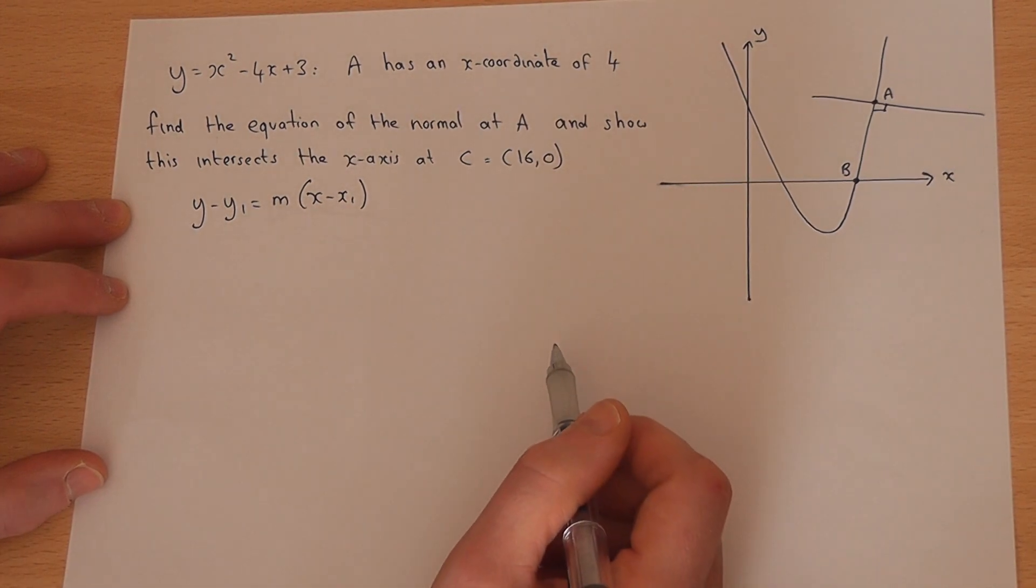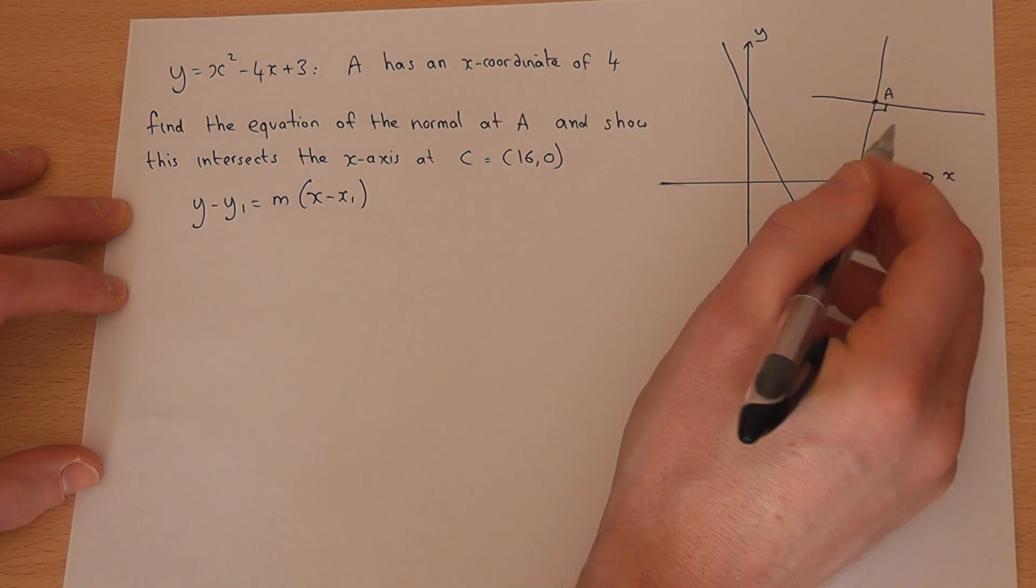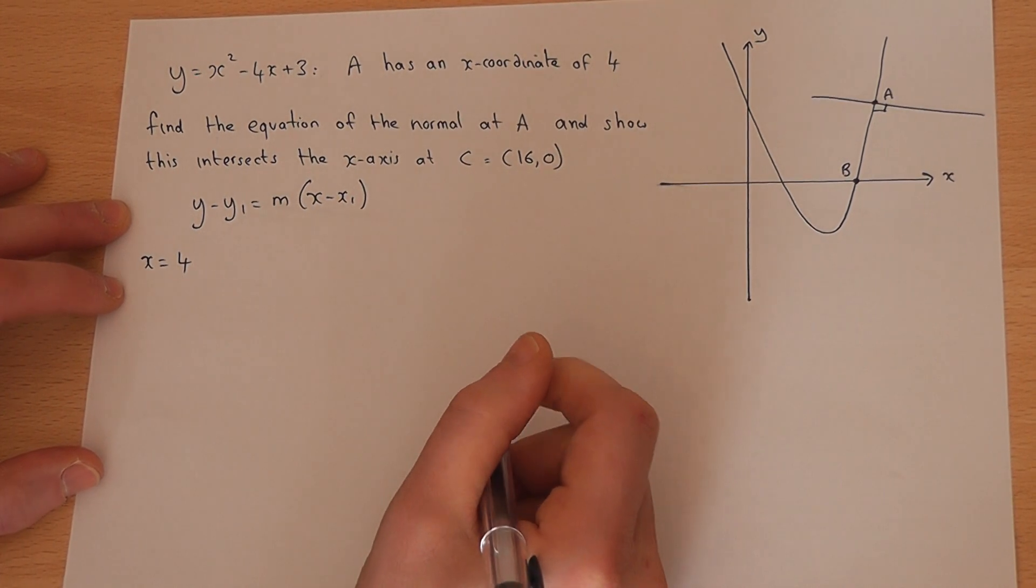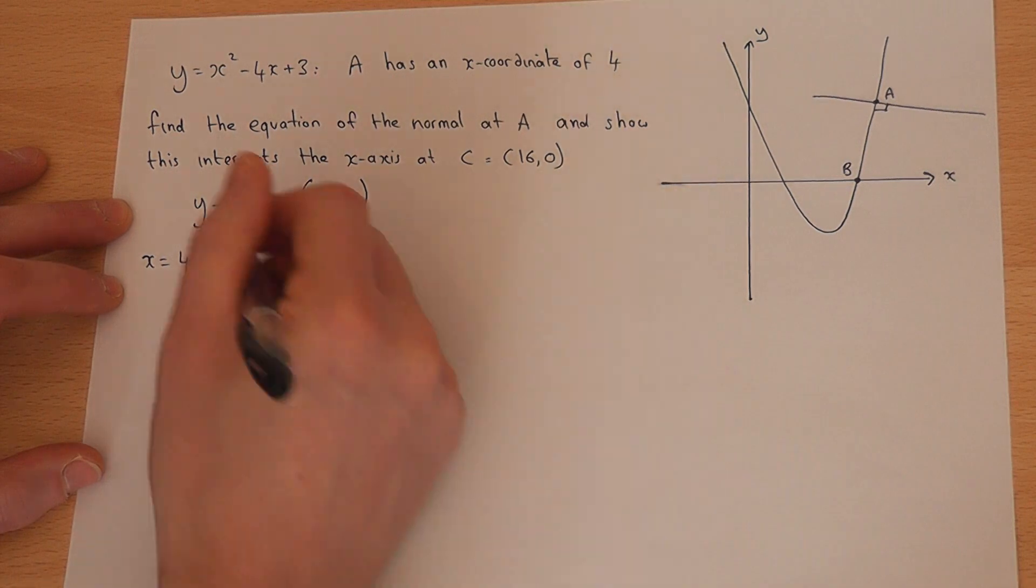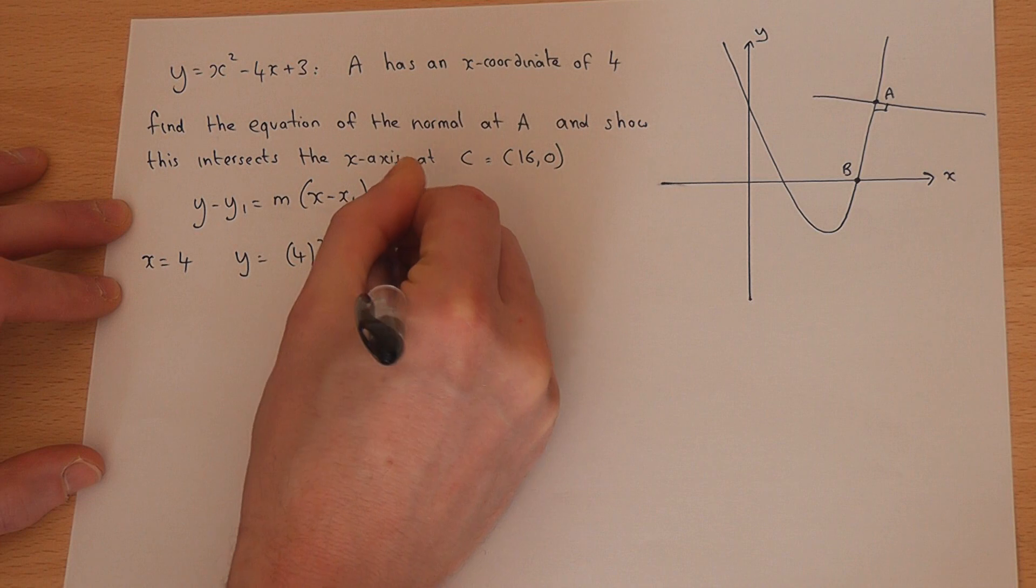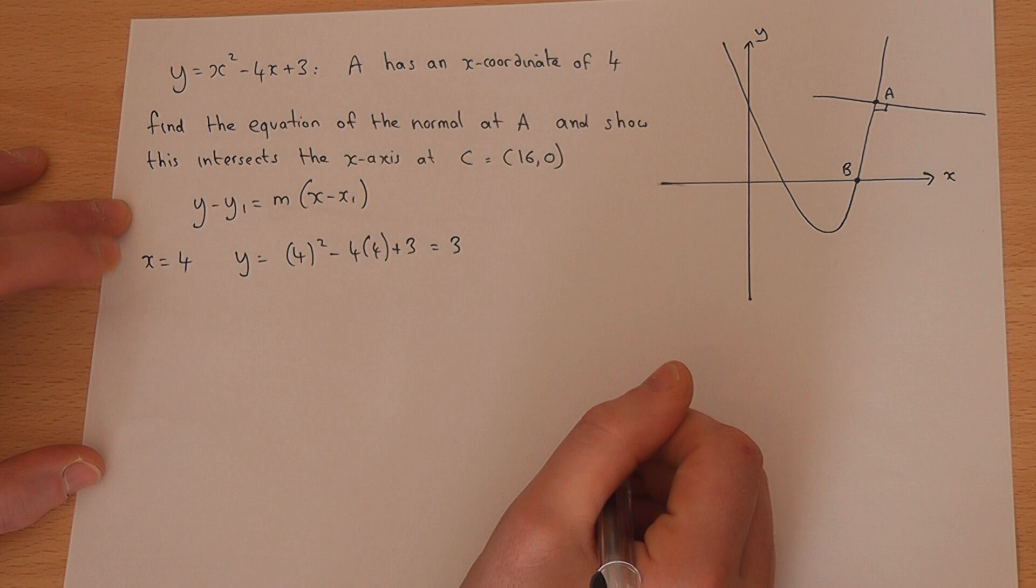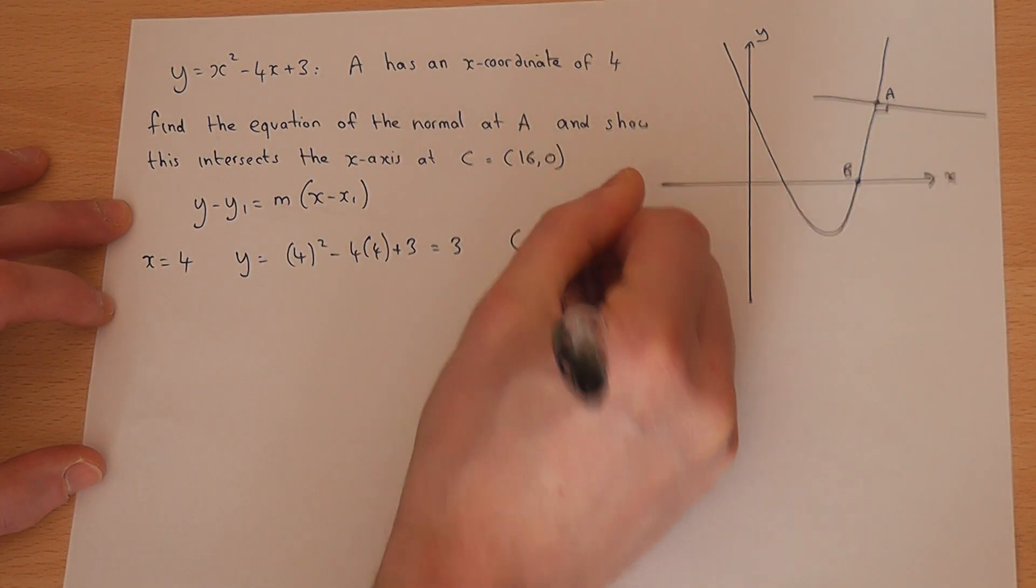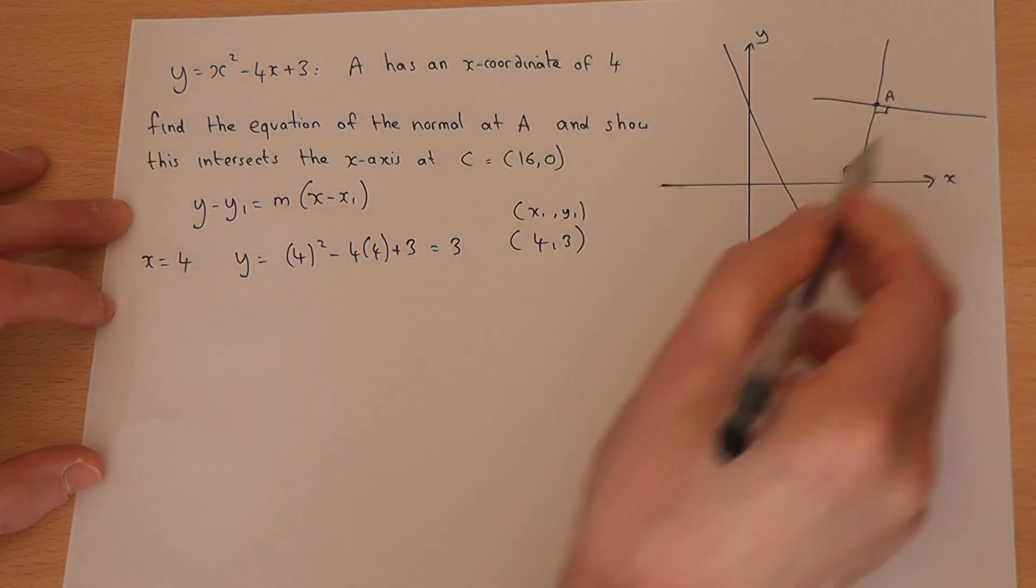We know that A is a coordinate on the line, and at this point x = 4. To find the coordinate, we put x = 4 into the y equation: y = 4² - 4(4) + 3 = 3. So this coordinate is (4, 3). We therefore have a known coordinate (x₁, y₁) on the line.